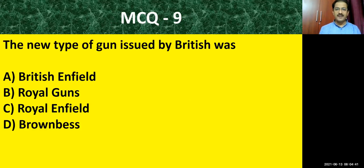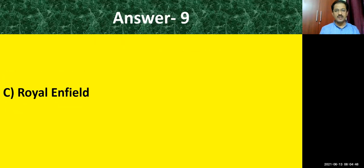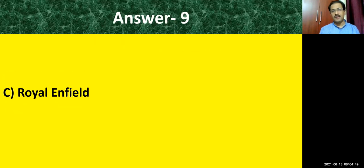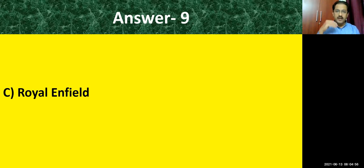Question number nine: the new type of gun issued by the British — what was its name? The correct answer is Royal Enfield. Earlier, they had the Brown Bess gun; that was withdrawn, and in its place Royal Enfield guns were given to the soldiers.